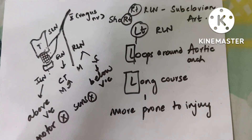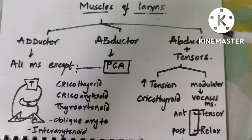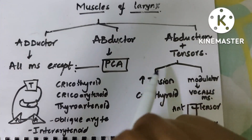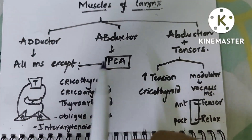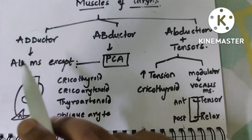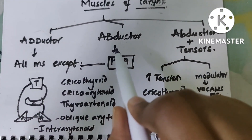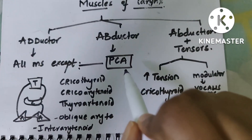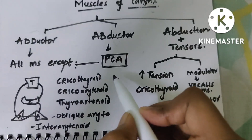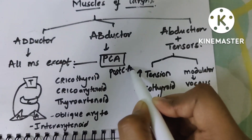Now discussing the muscles of the larynx — these are divided into adductors, abductors, and tensors. All muscles of the larynx are adductors except one muscle, which is the abductor: the posterior cricoarytenoid. Remember the posterior cricoarytenoid as the only abductor.